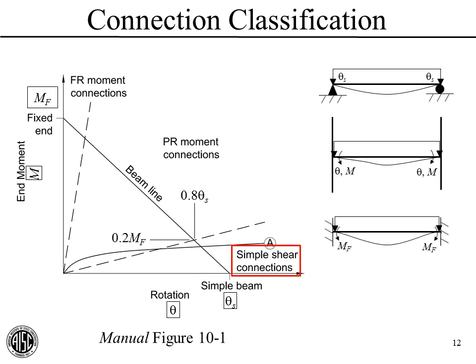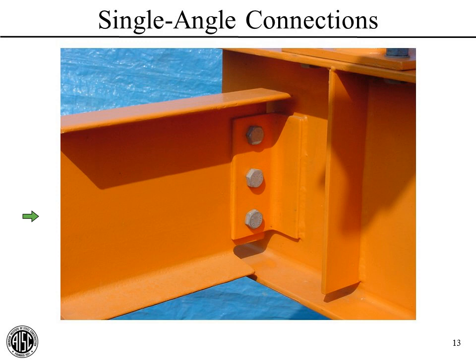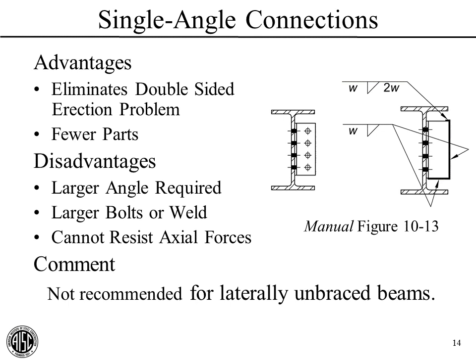Let's start off with Single-Angle Connections. These are very popular connections, similar to the Double-Angle Connections we covered last time, except we do not have an angle on the other side of the beam. In this picture, you can see a channel with a Single-Angle Connection welded to the support girder and bolted to the beam. These are pretty cool connections, used quite a lot nowadays. The advantages include eliminating the double-sided erection problem discussed last time for Double-Angle Connections because we do not have the shared bolts issue.